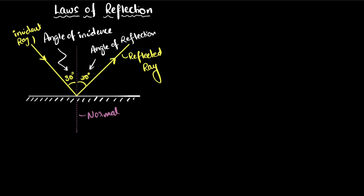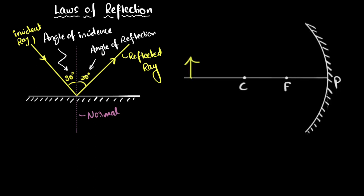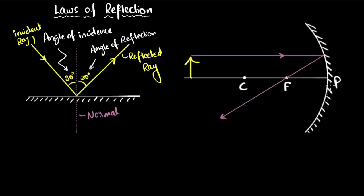Now let's apply this to curved mirrors to find the size, nature, and position of the image. Imagine we have an object outside the center of curvature for a concave mirror. We can draw a few specific rays of light to help us. The first ray is parallel to the principal axis. We know that after reflection this ray has to go through the focus — because that's the definition of focus: the point through which all parallel rays of light pass after reflection.